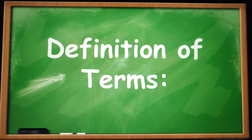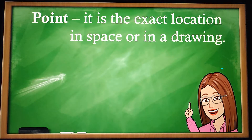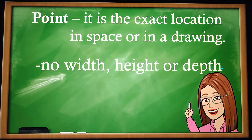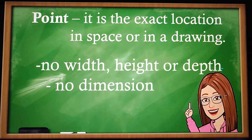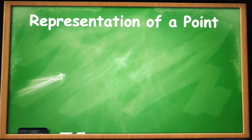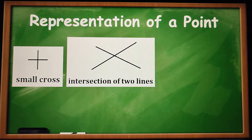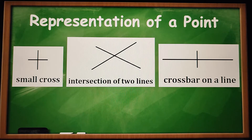Let us define first these following terms. Point — it is the exact location in space or in a drawing. There is no width, height, or depth, and there is no dimension. Never use a dot to represent a point on your drawing paper. These are the representations of a point: a small cross, intersection of two lines, and a crossbar on a line.